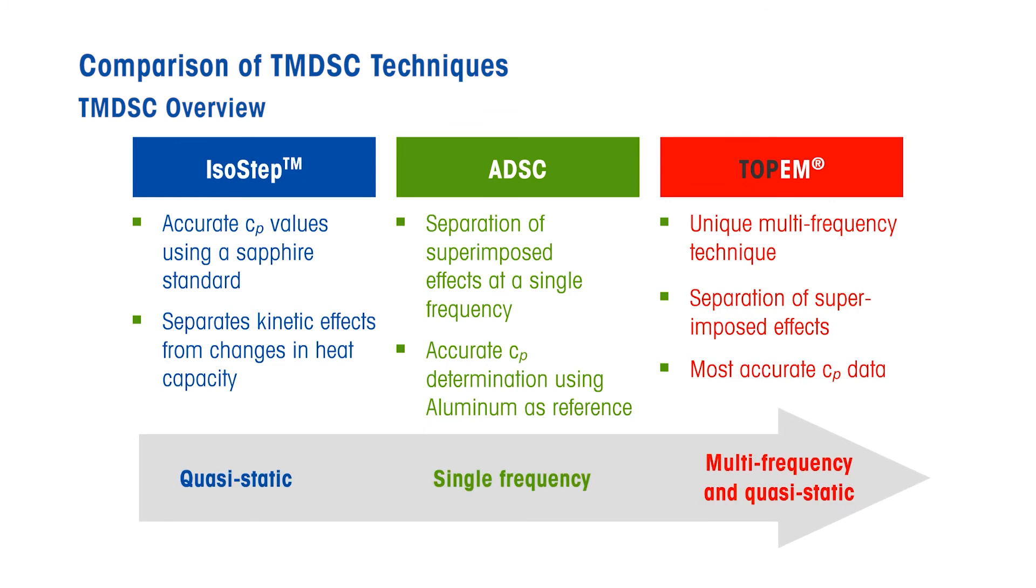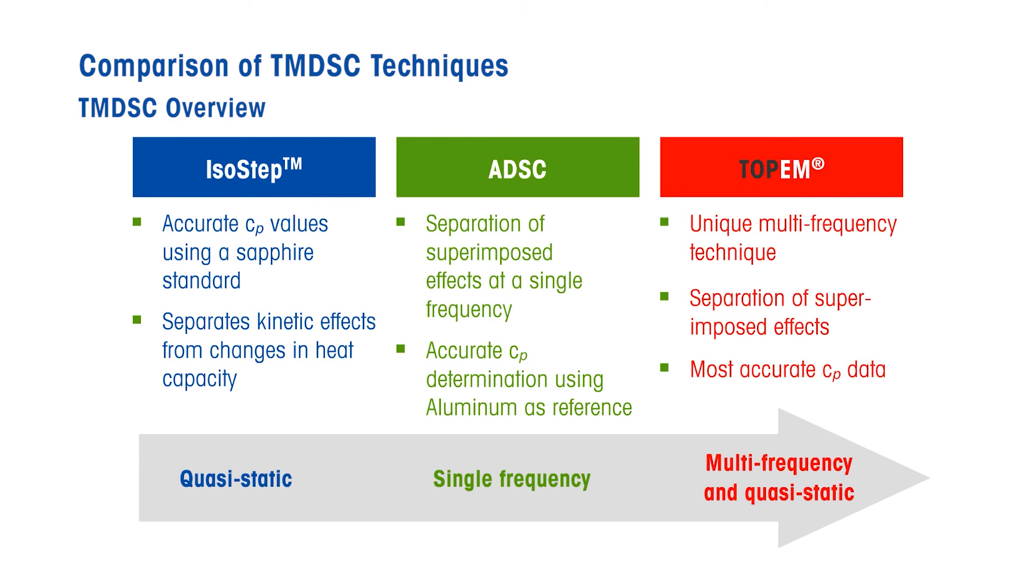All three techniques permit overlapping effects to be distinguished. This is achieved by separating heat flow into reversing and non-reversing heat flow components. In ADSC, different overlapping effects can be separated from one another at a single frequency. As a result, ADSC yields new information not obtained by conventional DSC, which allows you to understand and interpret the different thermal events that occur in the sample. Moreover, ADSC provides highly accurate heat capacity values using aluminum as a reference. ISO-STEP and TOPPM are explained in separate videos.